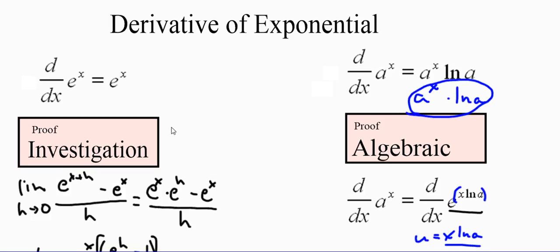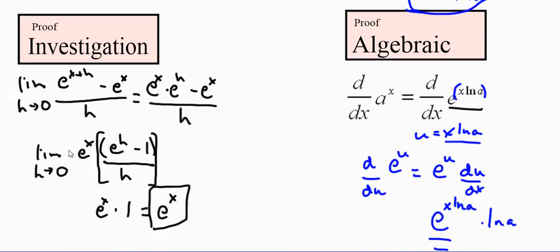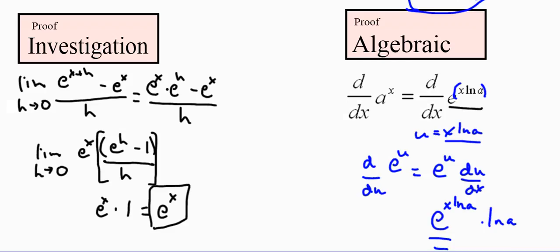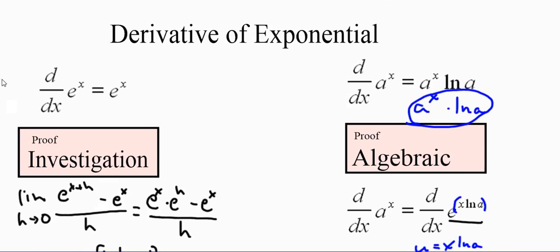So here are the two kinds of proof — one algebraic, one an investigation proof — understanding that the limit of a to the h minus 1 over h as h approaches 0 equals 1. Those kind of prove the derivative of the exponential with natural log of a. In the next tutorial, I'm going to go through some examples on how to apply these. Thank you.